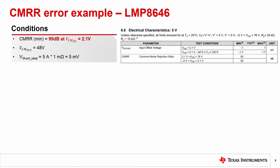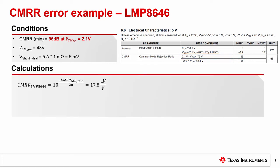Alright, let's calculate the CMRR error in an example system with a minimum load of 5 amps and an ideal shunt resistance of 1 milliohm. At first glance, the LMP8646 looks suitable as it can accommodate our common mode of 48 volts. Notice that there are two CMRR values defined depending on the common mode range. As our common mode is 48 volts, the 95 dB value is used. Through the conversion equation, we convert from 95 dB to 17.8 microvolts per volt.